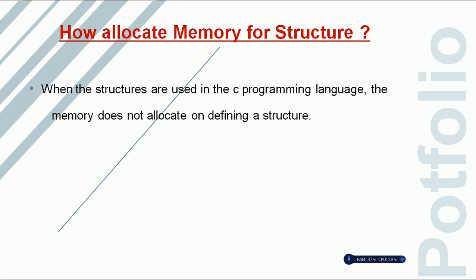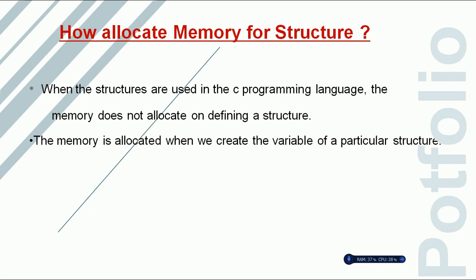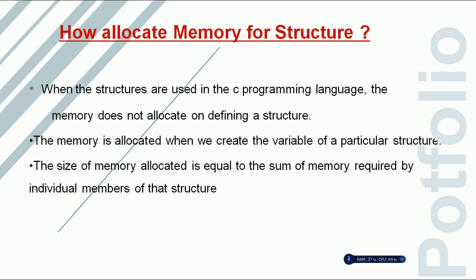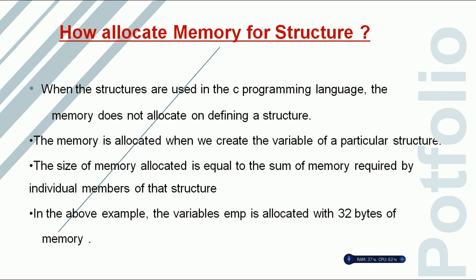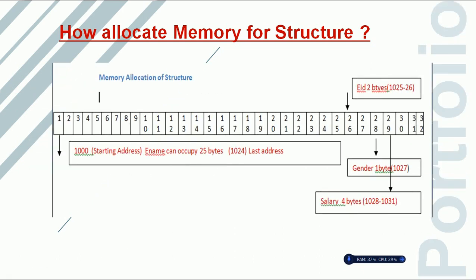Now we'll see how memory is allocated for a structure. When structures are used in C, memory is not allocated at the definition of the structure. Memory is allocated when we create a variable of that particular structure. The size of memory allocated is equal to the sum of the memory required by the individual members. In our example, the variable EMP is allocated 32 bytes of memory, as shown in the image.